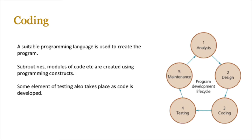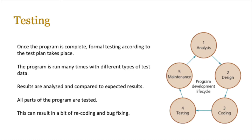Skipping proper design and going straight into coding can mean increased budgets, increased costs, and programs not being delivered on time. In the coding stage, you use a suitable programming language to create the program — coding subroutines and modules using programming constructs. Some element of testing happens as you code, checking the program is working as intended. In programming teams, different groups work on different modules which need to come together, and that's where the design becomes critical.